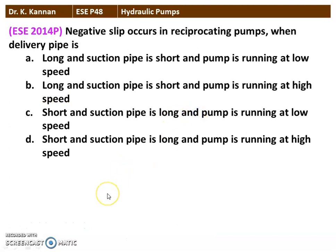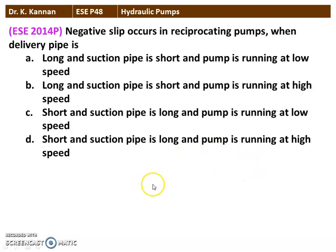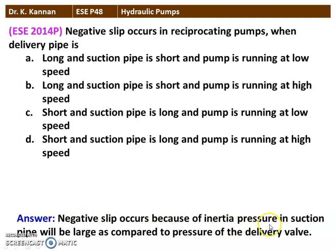Next question from the 2014 question paper: Negative slip occurs in the reciprocating pump when the delivery pipe is — options are: (A) long, suction pipe short; (B) long, suction short, low speed; (C) long, suction short, high speed; (D) delivery short, suction long, low speed; (E) delivery short, suction long, high speed. The correct answer is: delivery pipe short, suction pipe long, pump running at high speed. Negative slip occurs because the inertia pressure in the suction pipe is large compared to the pressure in the delivery pipe.